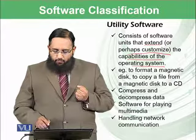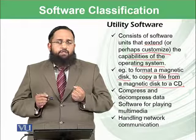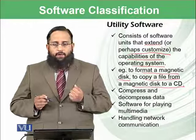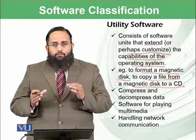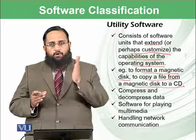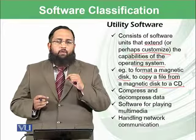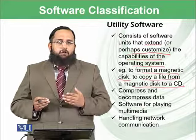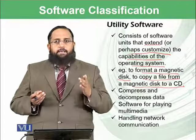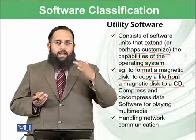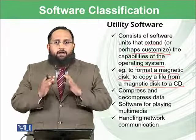For example, formatting a magnetic disk or copying a file from a magnetic disk to a CD — such software can be installed on your computer. If you purchase a DVD or CD and want to copy a file from a magnetic disk to it, you need a particular software, and that is known as a utility. This utility is not needed by all users worldwide; whoever needs it will install it, and it will extend the existing operating system for that particular user without affecting others.